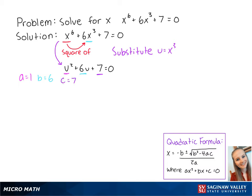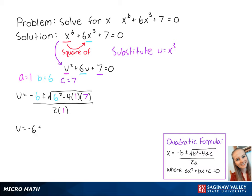Using the quadratic formula, we get u equals negative 6 plus or minus the square root of 6 squared minus 4 times 1 times 7, all over 2 times 1. This becomes u equals negative 6 plus or minus the square root of 8 over 2.